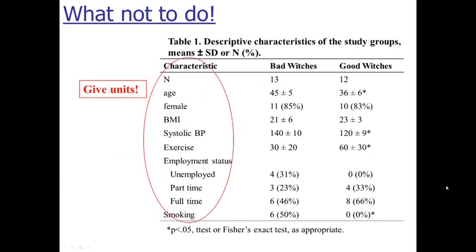Make sure that in tables you always give units. One of the things students tend to leave off are units. For example, age — if you look at 45 and 36, you might guess those are years, but it could be months. BMI and blood pressure — we can probably guess the units. But if you have exercise listed as 30 and 60, is that 30 minutes a day? 30 minutes a week? 60 minutes a year? 60 hours a year? There's no way to tell without having the units. So always be very specific about what you're referring to.